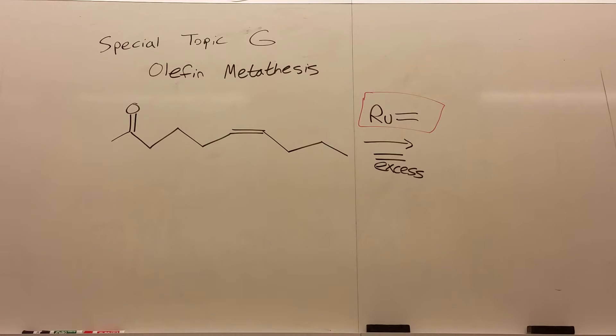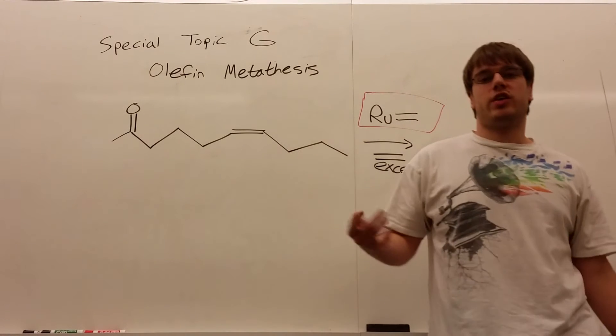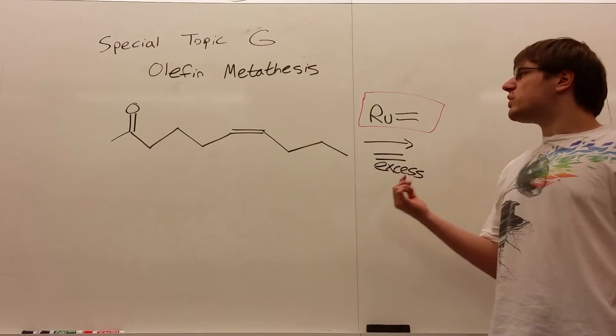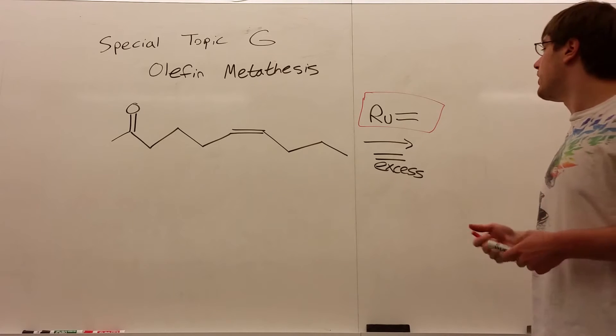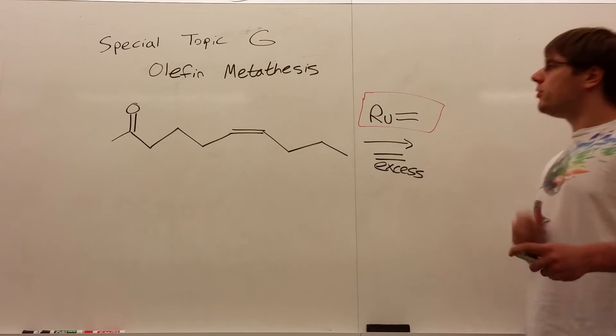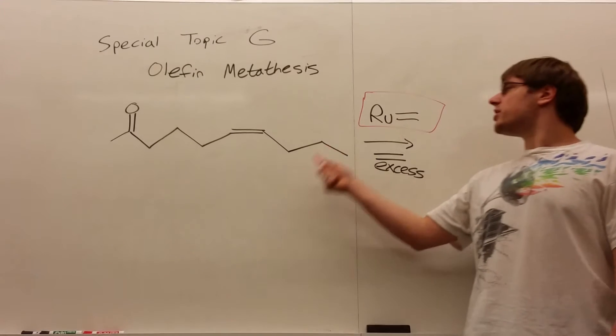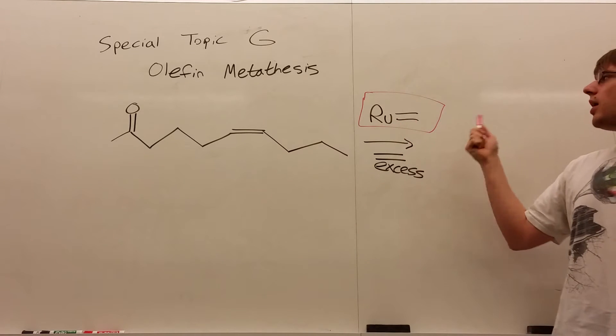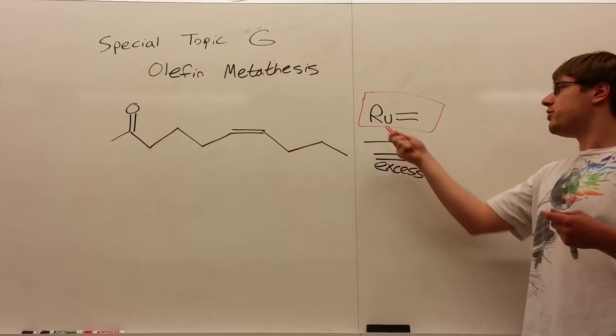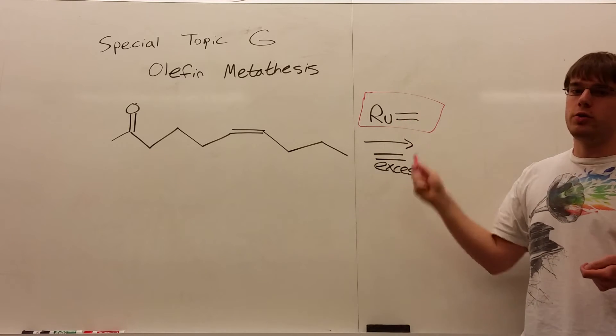The next thing we're going to talk about is olefin metathesis. Unlike the first three reactions, the Heck-Suzuki reactions, this one's a little more complex in the way we can use it, but I think it's kind of fun. How do you know you're going to do olefin metathesis? Because you see this over the arrow: ruthenium on a double bond. Now, ruthenium on a double bond can come in a bunch of different ways, but if you see Ru double bond, you know you're doing this.